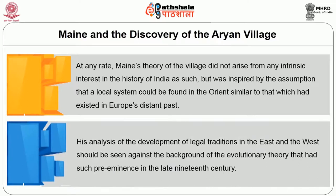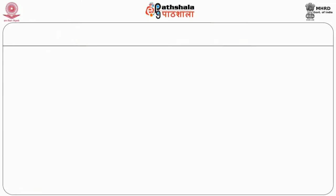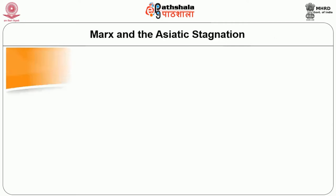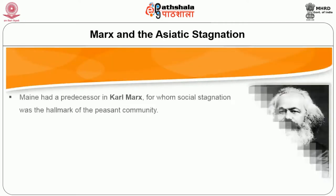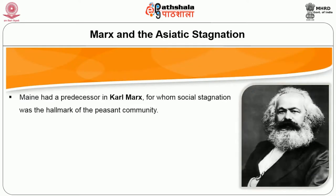His analysis of the development of legal traditions in the East and the West can be seen against the background of the evolutionary theory that had such pre-eminence in the late 19th century. Marx and the Asiatic Stagnation: Maine had a predecessor in Karl Marx, for whom social stagnation was the hallmark of the peasant community.